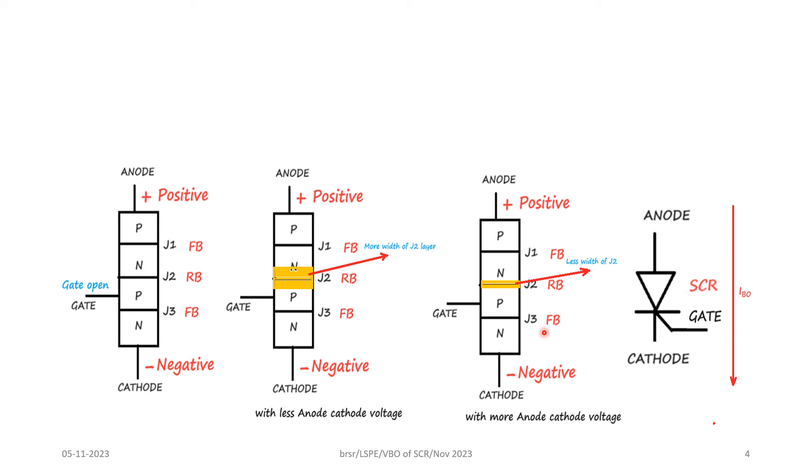Because the junctions J1 and J3 are already forward biased, the breakdown of the junction J2 will allow the flow of current from anode to cathode. Without the gate circuit, only application of the forward bias voltage between anode and cathode, the current flows through the device.